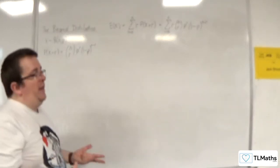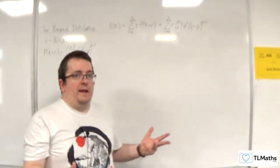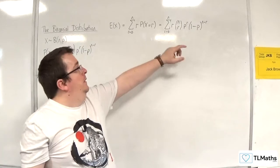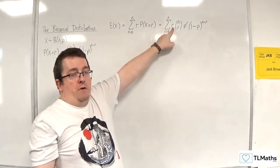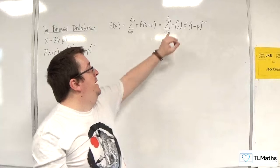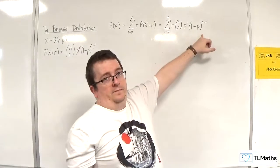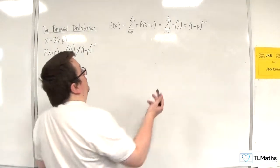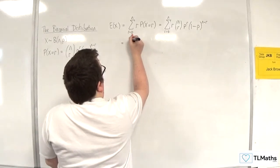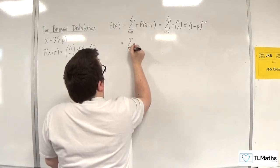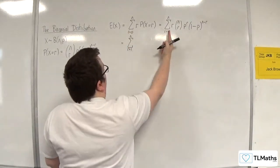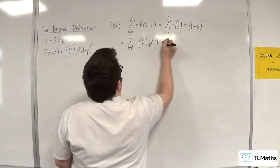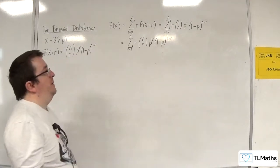Now the first thing to note is that when r is 0, the first term of this summation, because I've got r out the front, r being 0 is just going to be 0 times all of that. So the first term of this series will be 0. So I can just change the lower limit from r equals 0 to r equals 1, because the first term is going to be 0 anyway.